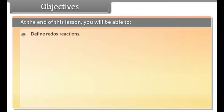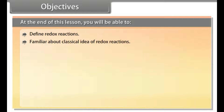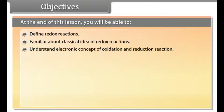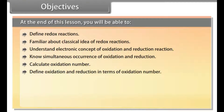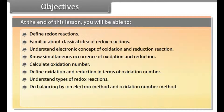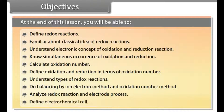At the end of this lesson, you will be able to: define redox reactions; understand the classical idea of redox reactions; understand the electronic concept of oxidation and reduction; know the simultaneous occurrence of oxidation and reduction; calculate oxidation number; define oxidation and reduction in terms of oxidation number; understand types of redox reactions; do balancing by the ion-electron method and oxidation number method; analyze redox reactions and electrode processes; and define electrochemical cell.